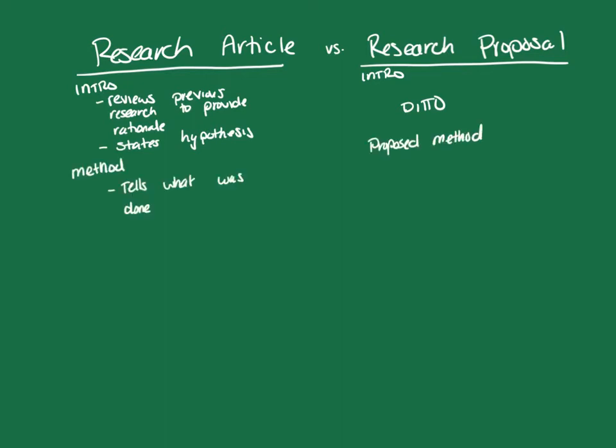Both papers also have a method section, but they're written a little bit differently. In a research article, the method tells what was done — who were the participants, how were the variables measured, and what was the procedure used. But in a research proposal, we instead state who we plan to collect data from, the measures we plan to use, and the procedures we plan to use. So the method section in a research proposal is written in future tense, whereas in a research article it's written in past tense.